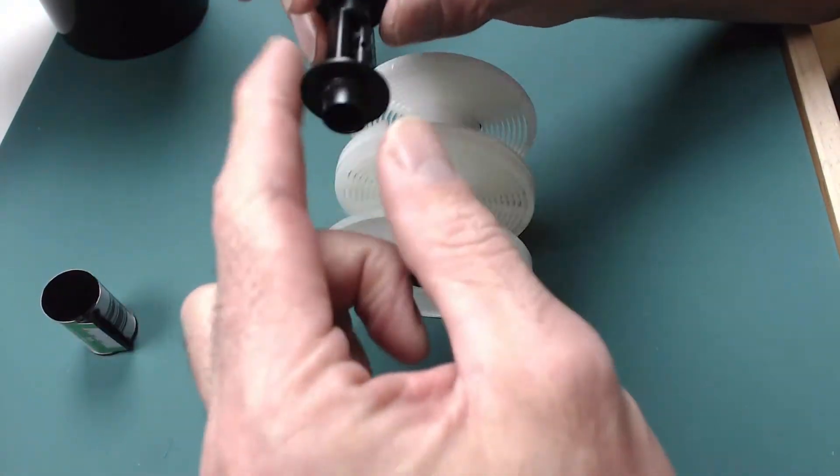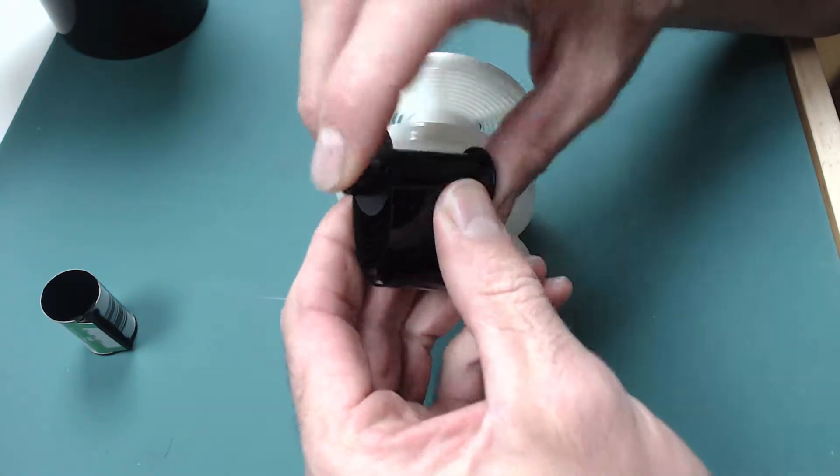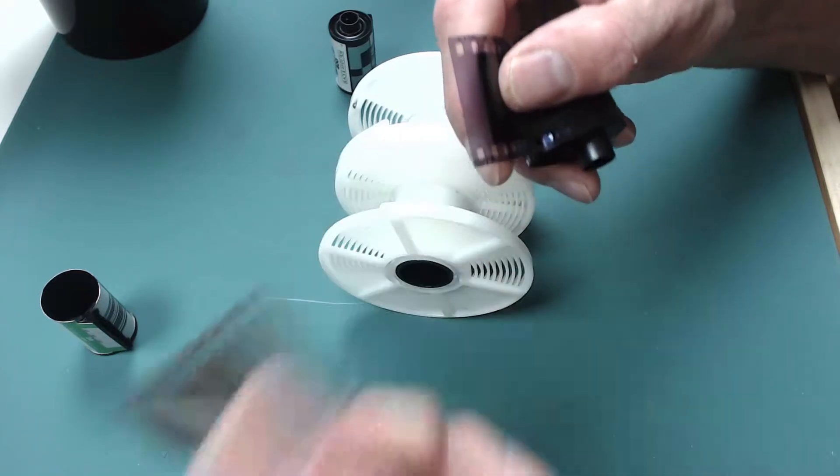The film will be coiled around the spool and attached to the spool. On the end of the film will be the leader that needs cutting off.